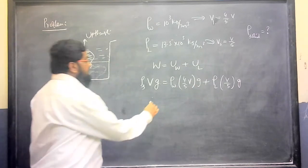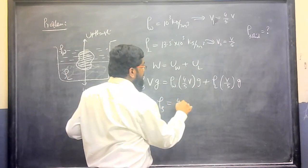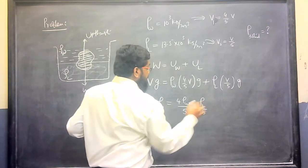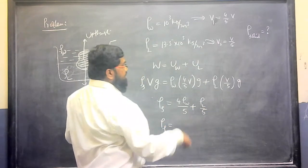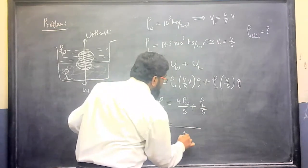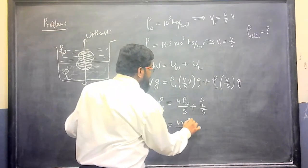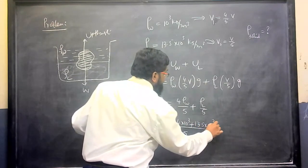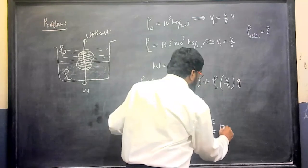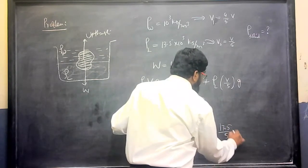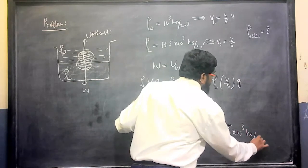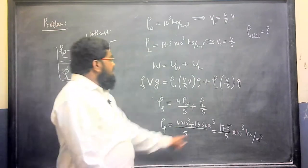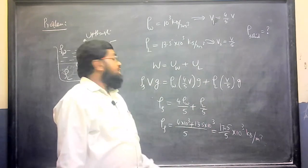V and G cancel everywhere. So density of the solid equals (4/5) × density of water plus (1/5) × density of liquid. Taking LCM of 5: density of solid = [4 × 10³ + 13.5 × 10³] / 5 = 17.5 / 5 × 10³ kg/m³.